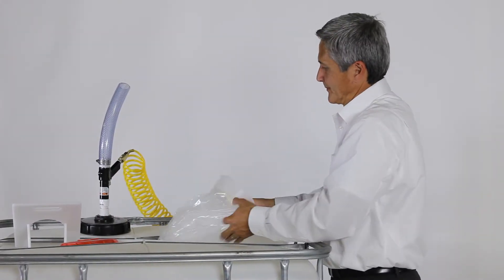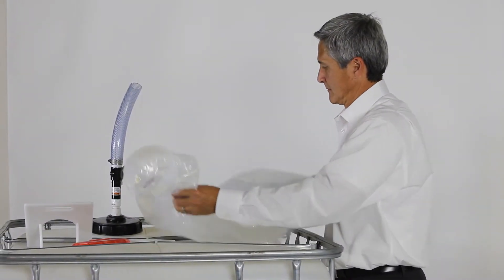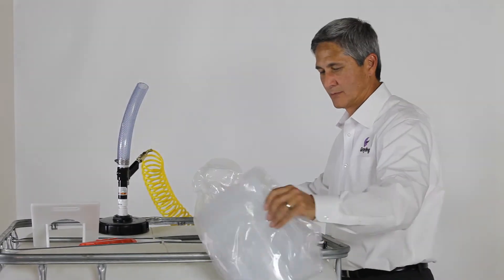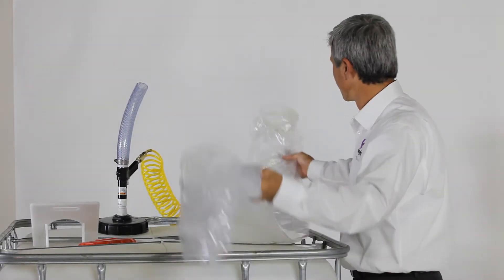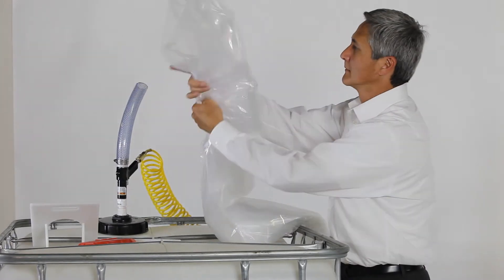Make sure that the IBC is clean and free of any liquid or residue. Any residue will prevent the liner from installing properly. Unfold the liner vertically, taking care not to unfurl the side panels. Place on top of the IBC.